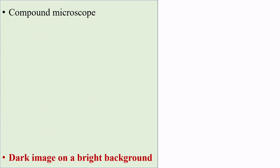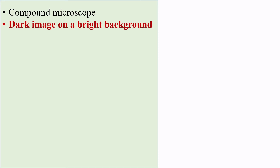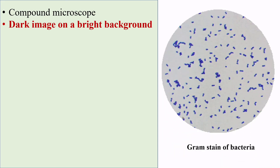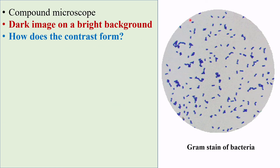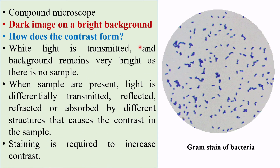Now let's touch on the brightfield microscope. It is basically a compound light microscope. It produces a dark image on a bright background — bright background and dark image — hence the name brightfield. Now how does this contrast form? That is, how does the sample appear dark against its light background?